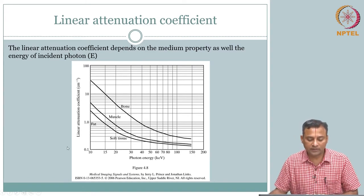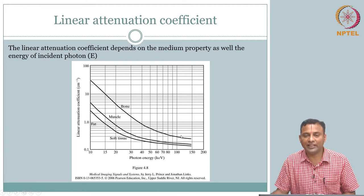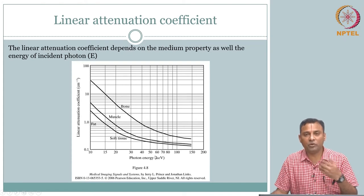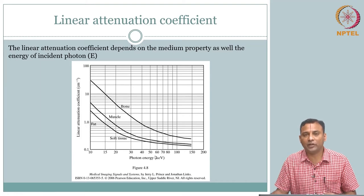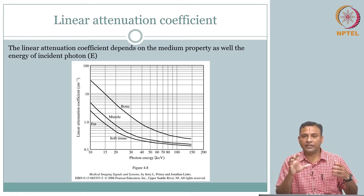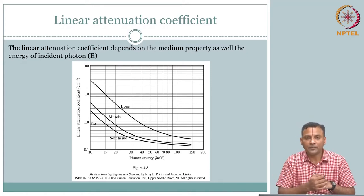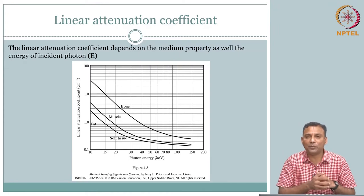There are multiple energies and mu is actually a function of energy. Going back to brush up the interactions we talked about — photoelectric effect and Compton effect — intuitively, if a photon is going with high energy it will not interact much and will come out the other direction. That is what we put as directly proportional.